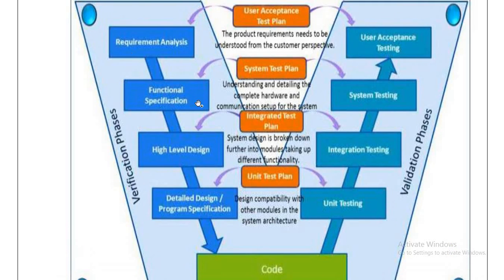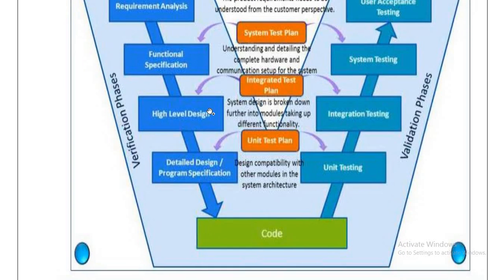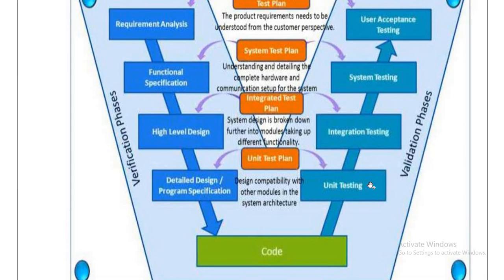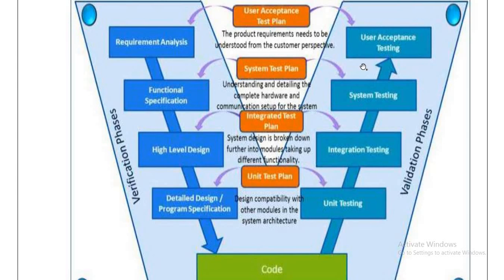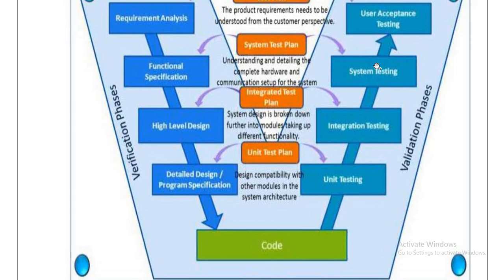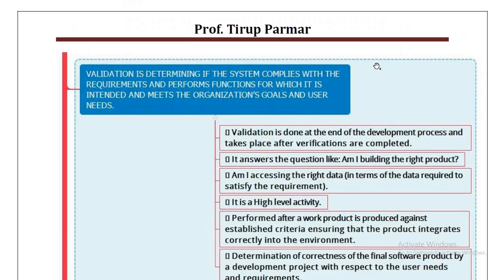To summarize the flow: first requirements are gathered, then specific functions are checked, then design and program specifications are checked. Then comes coding, followed by unit testing of individual units, then integration — connecting modules and checking they work together properly. After that comes system testing, where we check hardware, operating system, and software compatibility. Finally, user acceptance testing, where users work and check whether the software is user-friendly and fulfills the defined requirements.